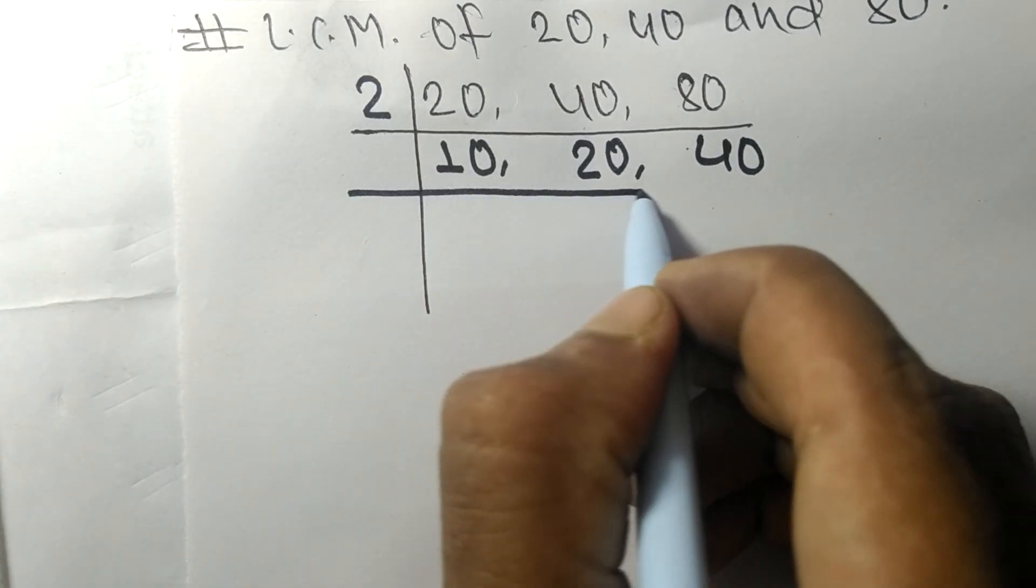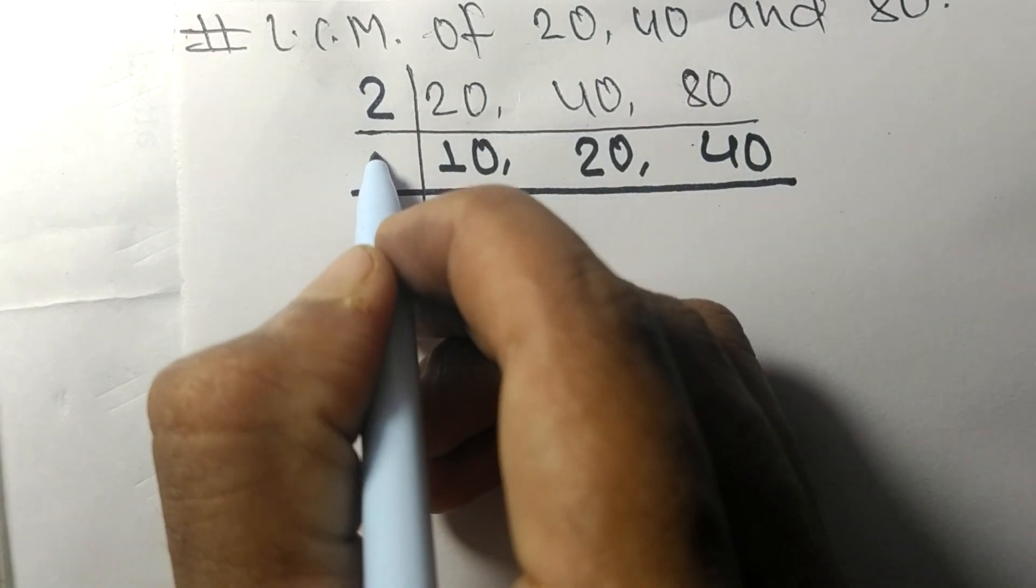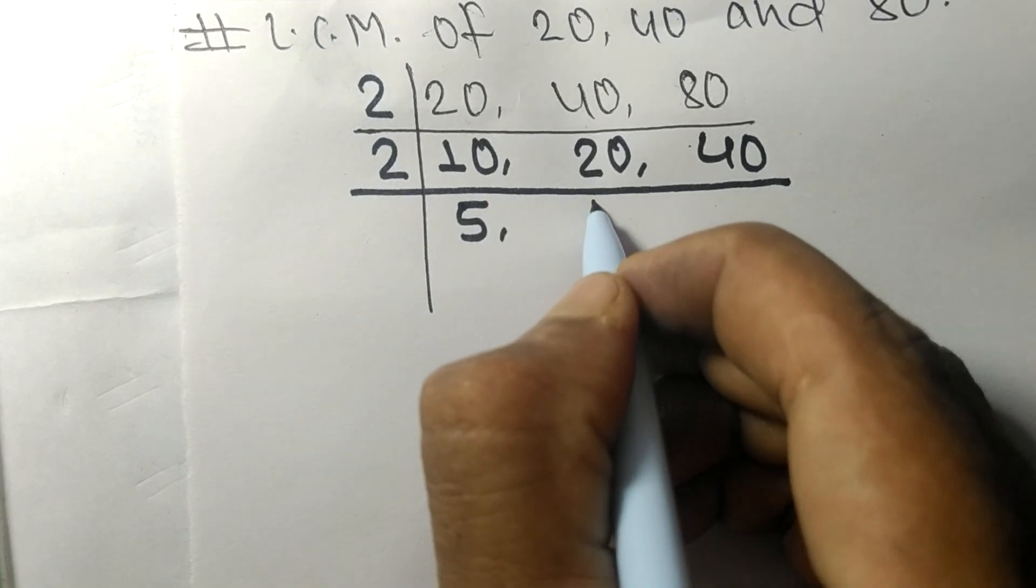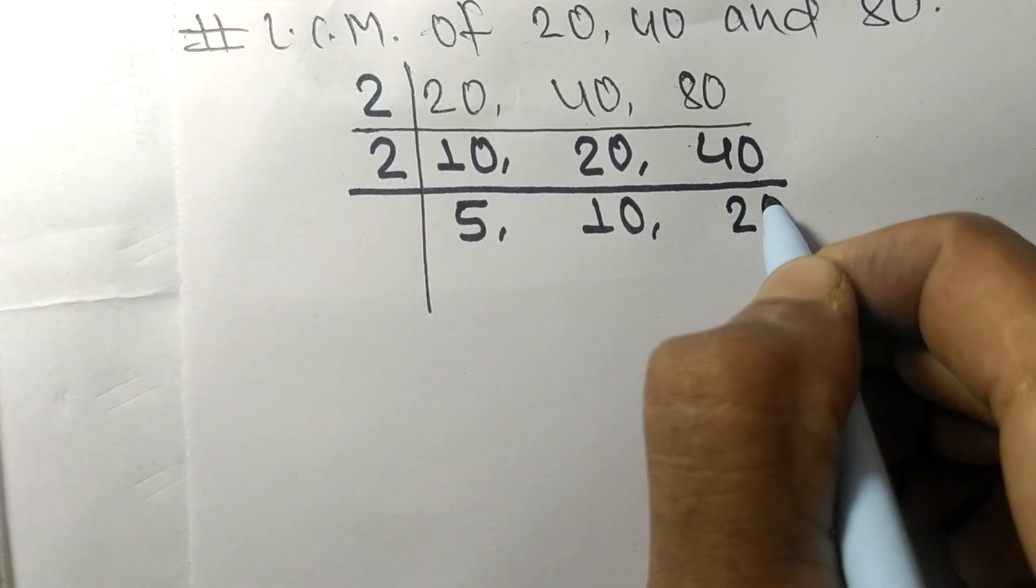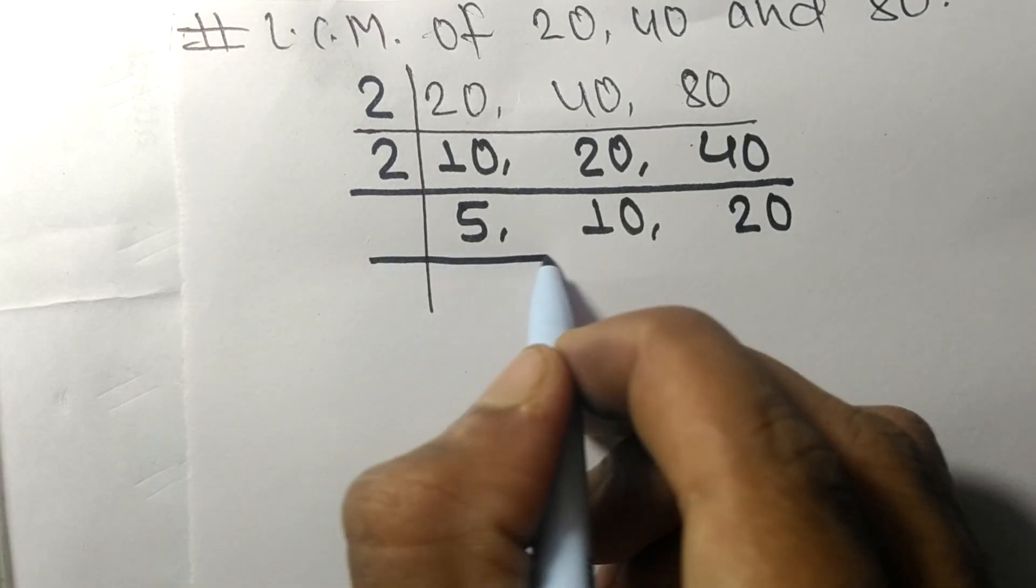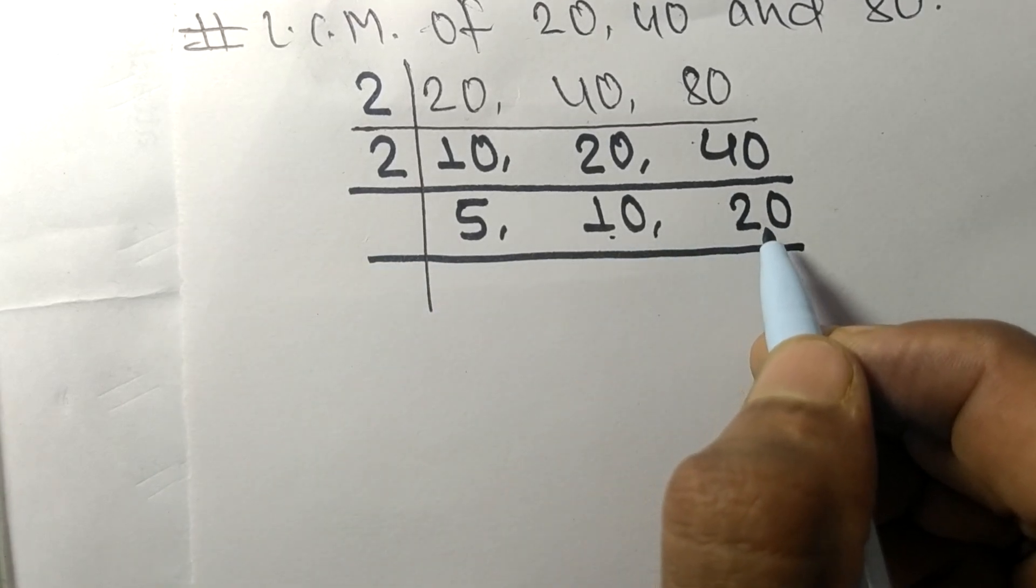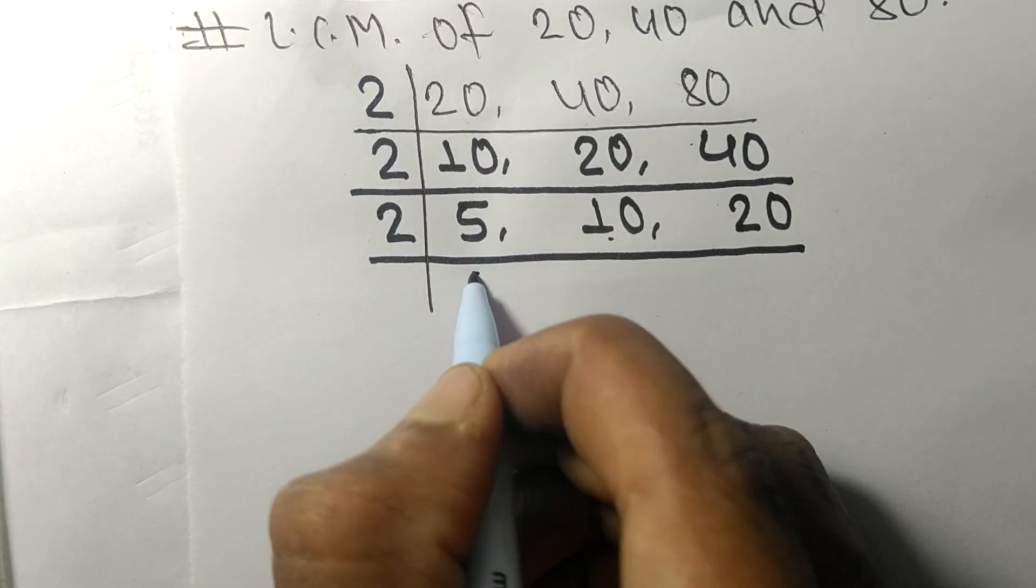Now again these all numbers are divisible by 2. 2 times 5 means 10, 2 times 10 means 20, 2 times 20 means 40. Now these 10 and 20 are divisible by 2, but 5 is not divisible, so it is the same.